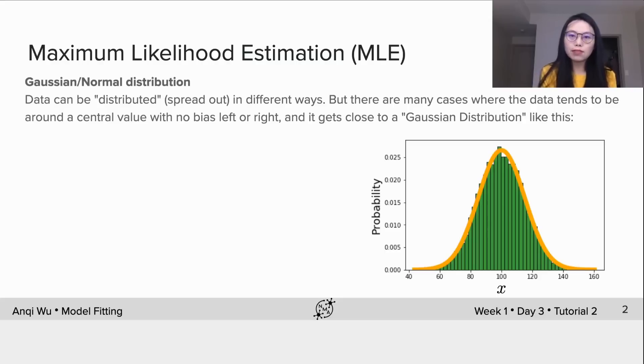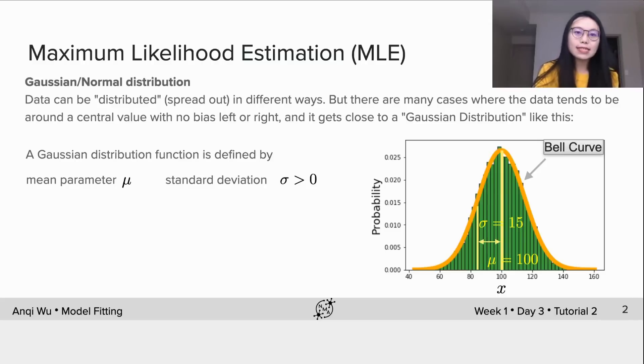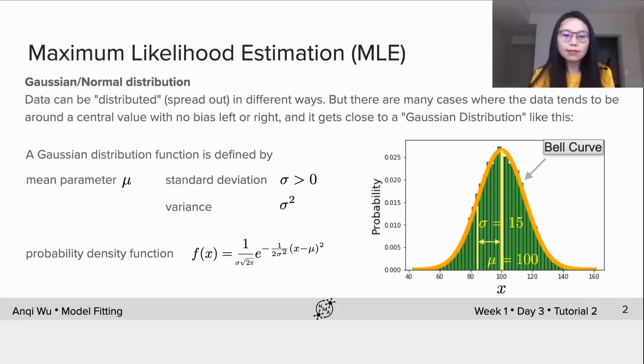The green bars formulate a histogram of data x. It tells the probability of the occurrence of each possible value of x. We can draw a bell-shaped curve around it, and this bell curve is what we call Gaussian distribution function. A Gaussian distribution function is defined by a mean parameter mu and a standard deviation sigma, which is larger than zero. The mean is where the peak is at, and sigma is a measure of how spread out the data distribution is. The variance of the distribution is sigma squared. And a general form of the probability density function is f of x, written as this form. And this is the orange curve in this figure.